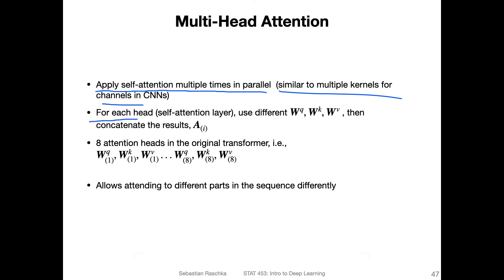So for each head, we use different weight matrices. So we had three weight matrices, for the query, the key and the value. And we will use different ones now. And then we will concatenate the results. So it will be more clear in the next slide.